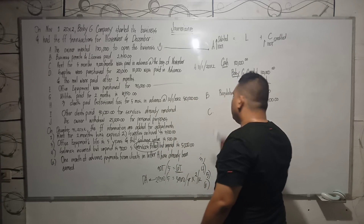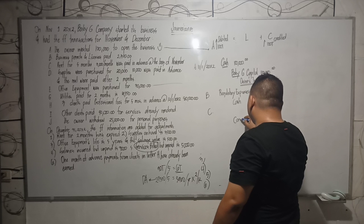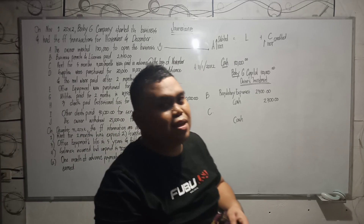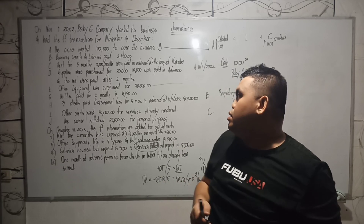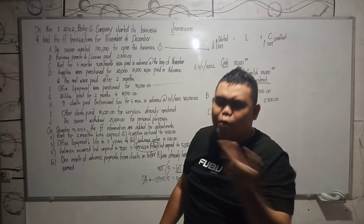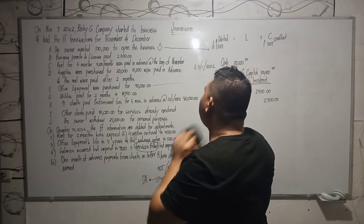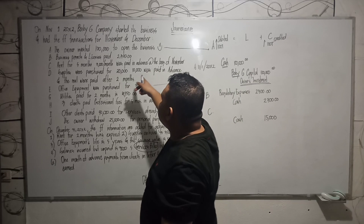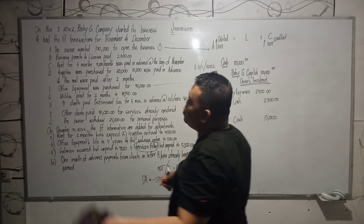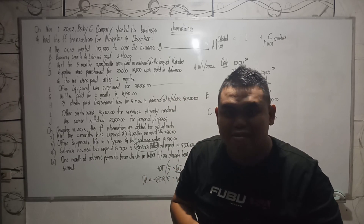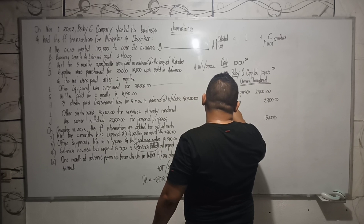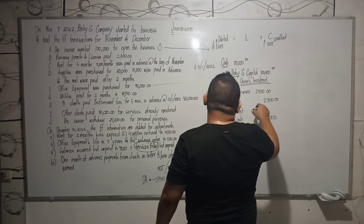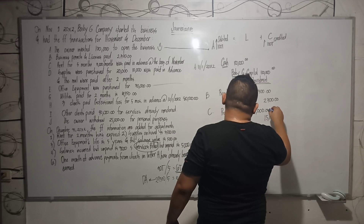On letter C, you're going to credit cash because you have paid in advance. When there is an expenditure, I will always write credit cash immediately. In this case, credit cash $15,000 because you have paid for it. However, since you have paid for something in advance without using its benefit yet, there is also an asset acquired — what we call prepaid rent. Imagining it is in the chart of accounts, you debit prepaid rent. That is the entry for letter C.